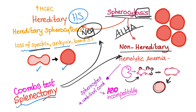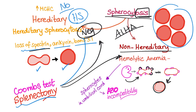Can splenectomy cure spherocytosis? In hereditary spherocytosis, no — if you remove the spleen, the hemolysis will be reduced, but the spherocytes will remain. On the other hand, theoretically speaking, in cases of hemolytic anemia with splenomegaly and extravascular hemolysis, removing the spleen may allow the bone marrow to eventually produce normal-shaped cells after the existing cells are destroyed after 120 days.